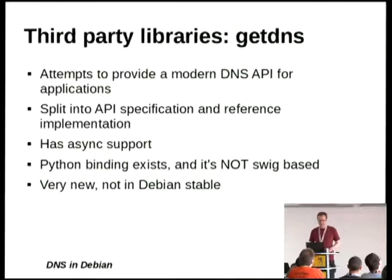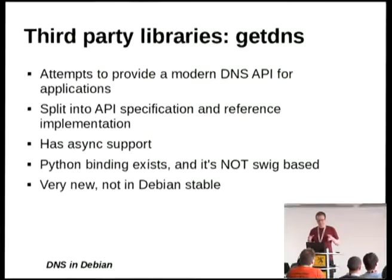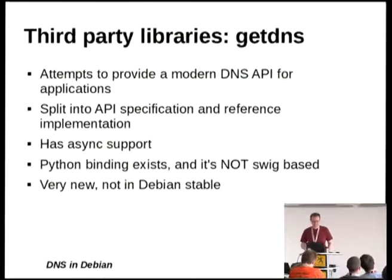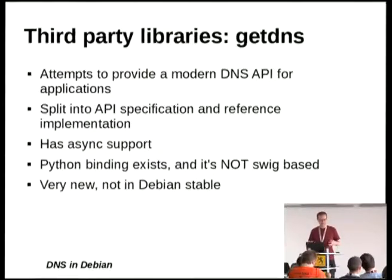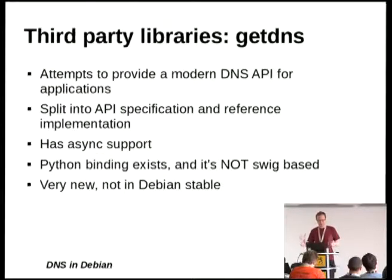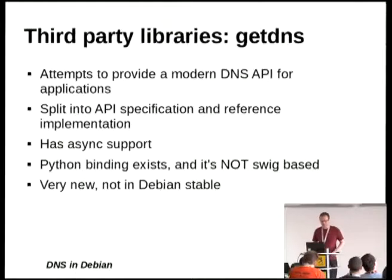getdns is another option. This is probably the most recent and most comprehensive attempt at the application use case. It's intentionally focusing on DNS porcelain for application programmers. It's got a nice modern API, async support, and they've taken a fairly formal approach — splitting it into an API specification and a reference implementation. There is a Python binding and it's not SWIG-based. It's very new and it's not in Debian stable.